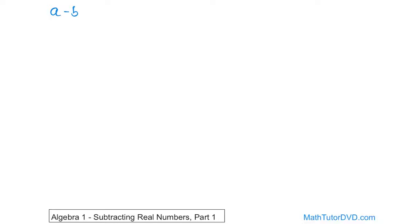The basic idea you need to understand is that when you take the concept of a minus b — a number a minus another number b — what that really is, in terms of algebra, is a plus a negative b. If you can remember that, then all of these problems are going to be simple, because you already know how to add negative and positive numbers.